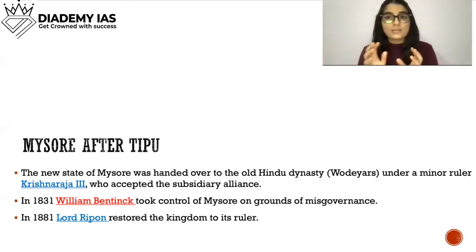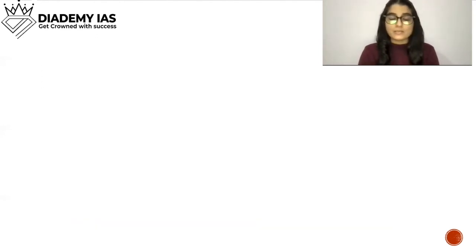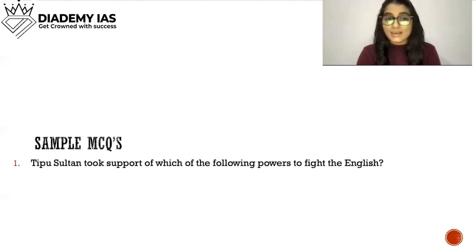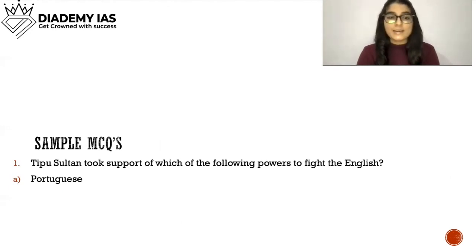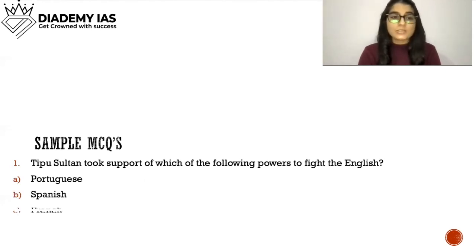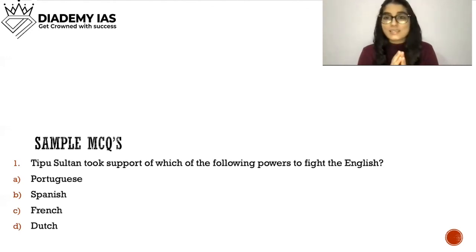You have to remember all four Anglo-Mysore Wars. Now some sample MCQs: First — Tipu Sultan took support of which power to fight the English? Options: Portuguese, Spanish, French, Dutch. The answer is C, French.